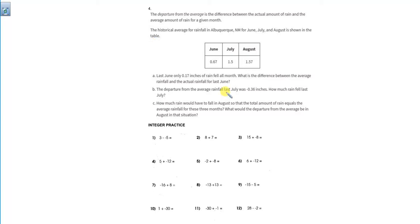So that is a simple subtraction problem. What we would do is 0.67 minus 0.17, and that would give us a difference of a half of an inch of rain. So they were off by 0.5.